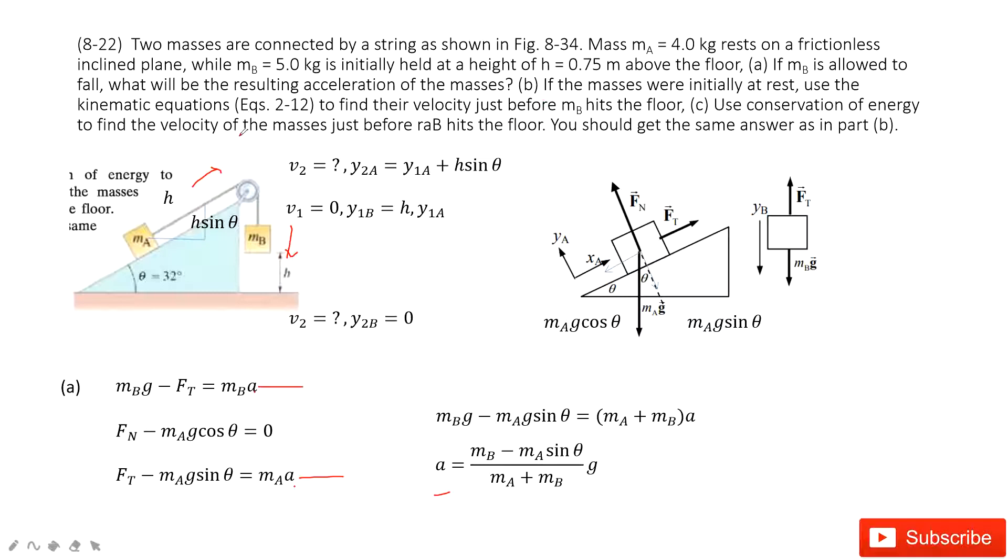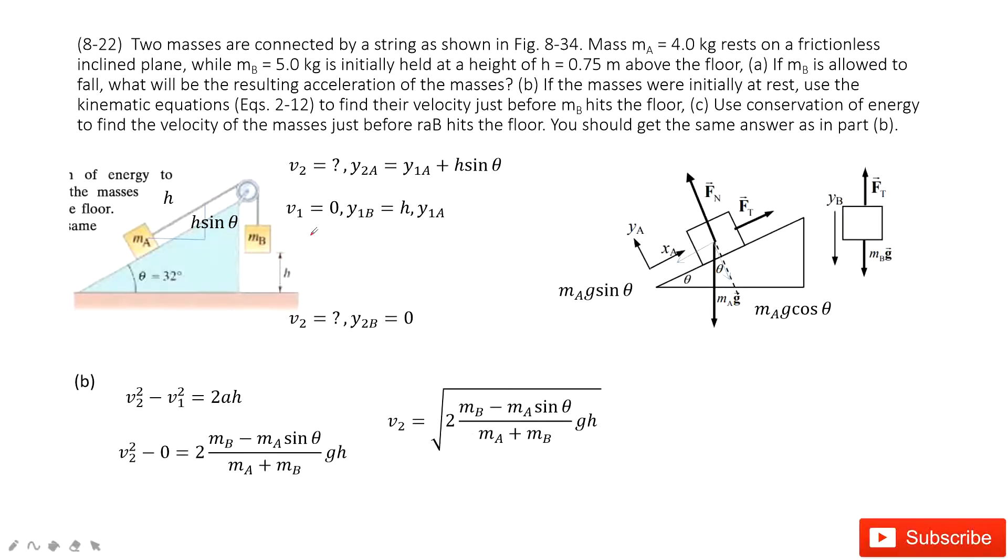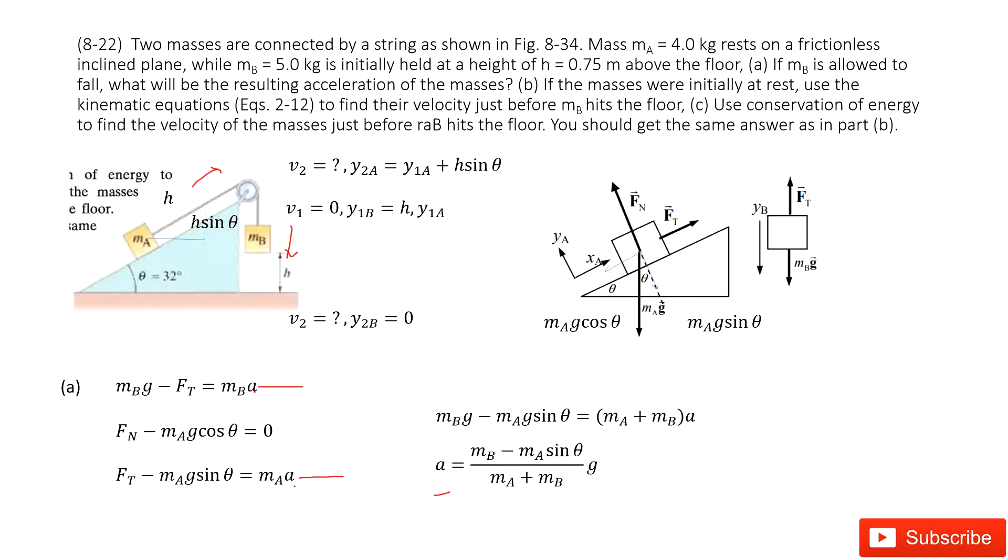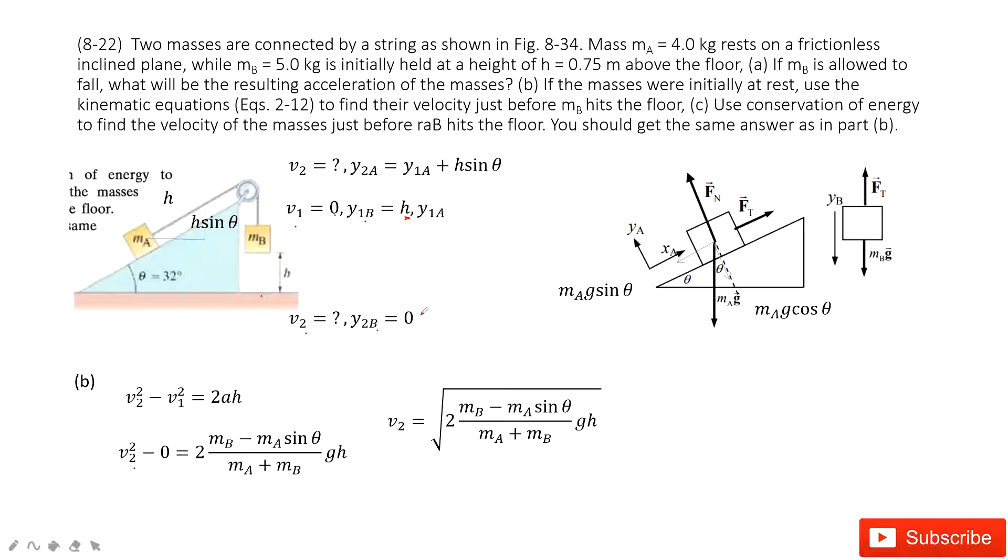The next question is, can you find the final velocity for B? Yes. How can we do that? We consider at the initial position for B, the velocity is zero and the position for it is H. Now we know acceleration, initial position, final position, and initial velocity. Can you find the final velocity? Yes. Use our favorite equation: final velocity squared minus initial velocity squared equals 2a delta y. This delta y is just H. Then you input the acceleration inside and you get the velocity V2.